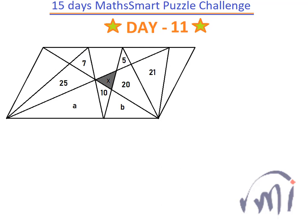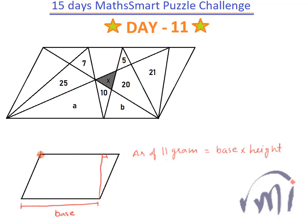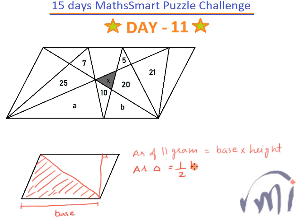Before solving that, let's re-discuss the area of a parallelogram. The area of a parallelogram is given as base multiplied by height, where height is the perpendicular drawn from any vertex to the base. If we draw any diagonal, the parallelogram gets divided into two triangles, where the area of each triangle is equal to one-half base times height.